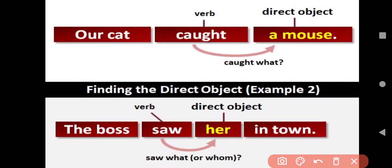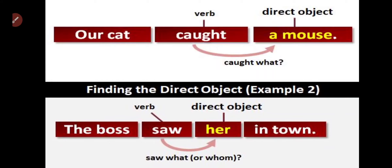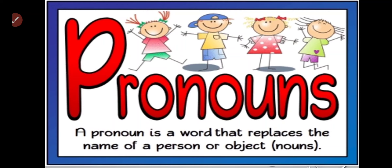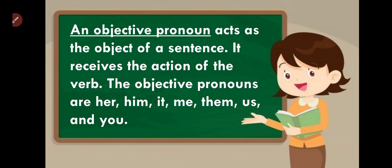In the sentence 'The boss saw her in town,' who is performing the action? The boss. The action is 'saw,' and 'her' is the object receiving the action. A pronoun is a word that replaces the name of a person or object — we can replace a noun with a pronoun. An object pronoun acts as the object of a sentence and receives the action of the verb.